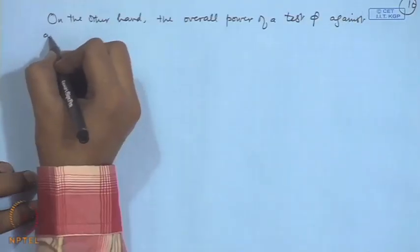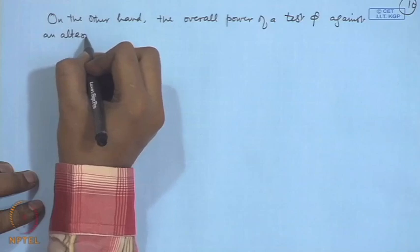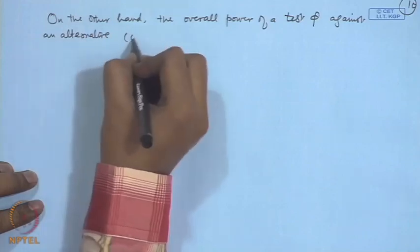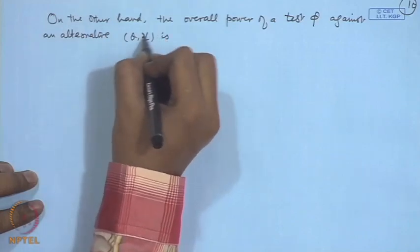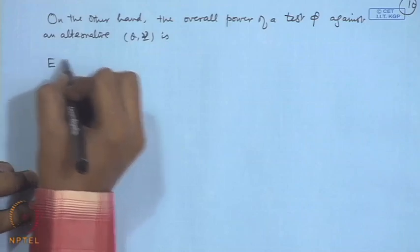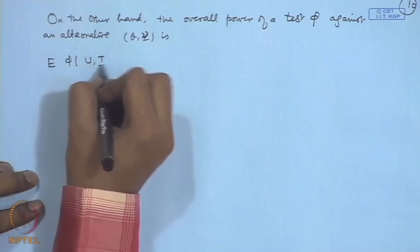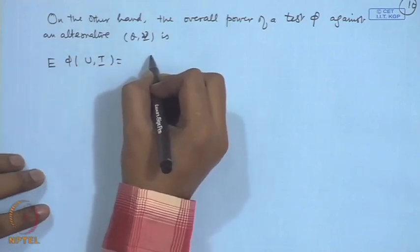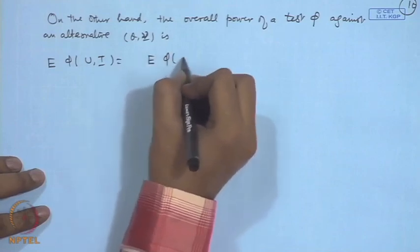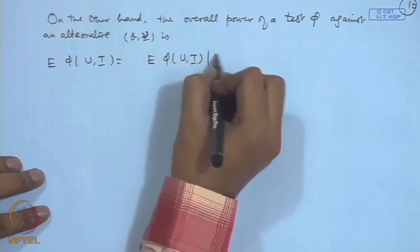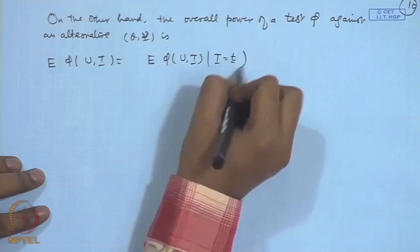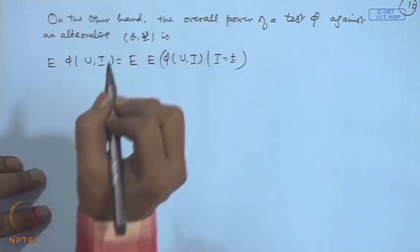Against an alternative theta nu is expectation phi(u,t), and this is an alternative theta that is equal to expectation of phi(u,t) given t is equal to t, expectation of this.